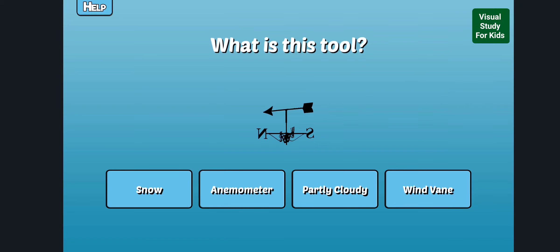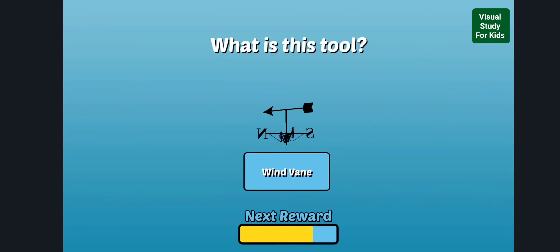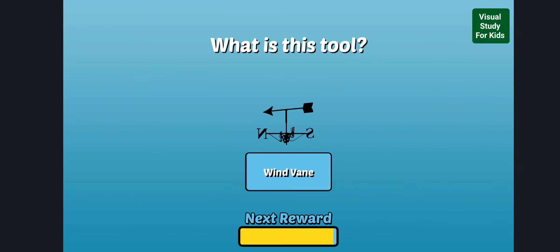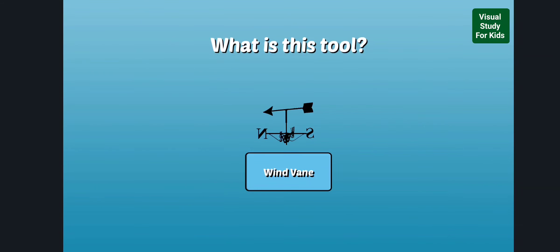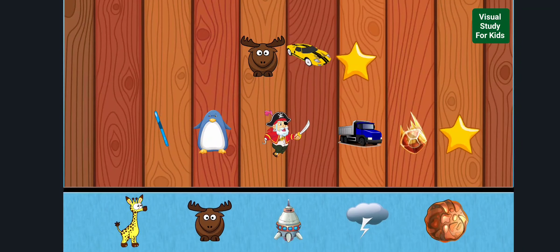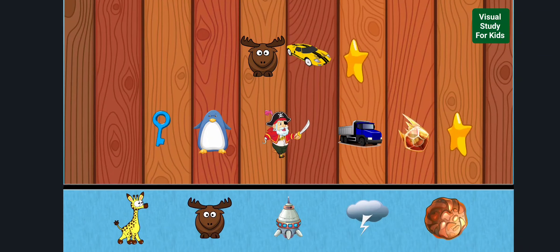What is this tool? This is a wind vane and can indicate the direction from which the wind is blowing. You earned a new reward!